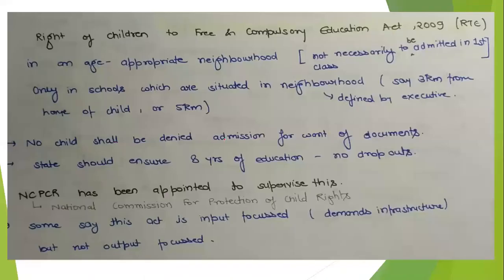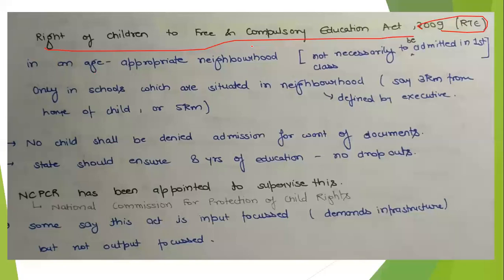To implement Article 21A, Parliament further enacted the Rights of Children to Free and Compulsory Education Act, 2009. The first provision was that every child in the age group of 6 to 14 years shall be provided free and compulsory education in an age-appropriate classroom in the neighborhood school, with the executive defining what constitutes the neighborhood.